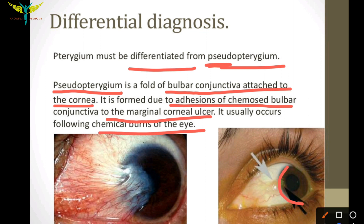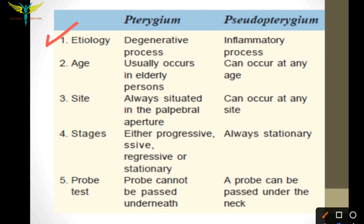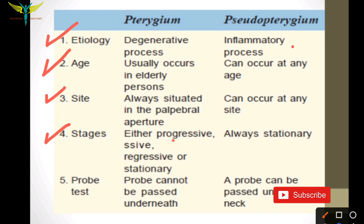Differentiating pterygium from pseudo pterygium: the etiology of pterygium is a degenerative process, whereas pseudo pterygium is an inflammatory process. Regarding age, pterygium is usually seen in elderly, while pseudo pterygium can occur at any age. Regarding site, pterygium is always situated in the palpebral aperture, whereas pseudo pterygium can occur at any site. For stages, pterygium has progressive, regressive, or stationary stages, while pseudo pterygium is always stationary.